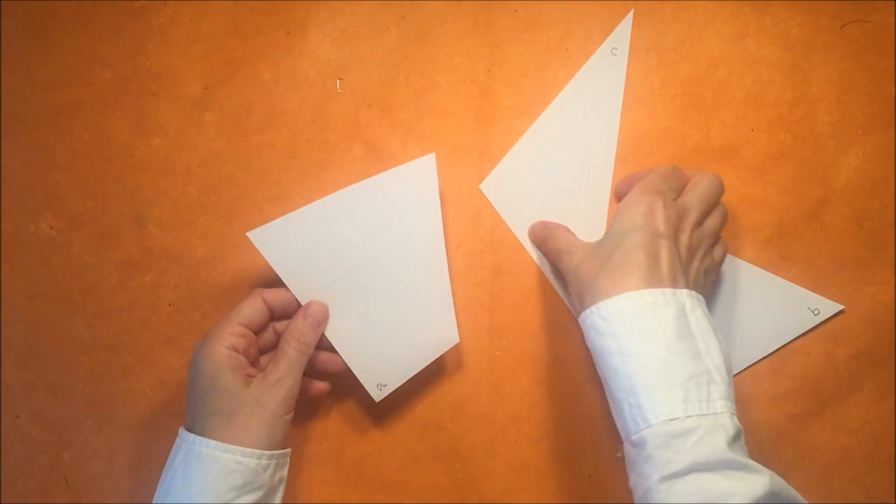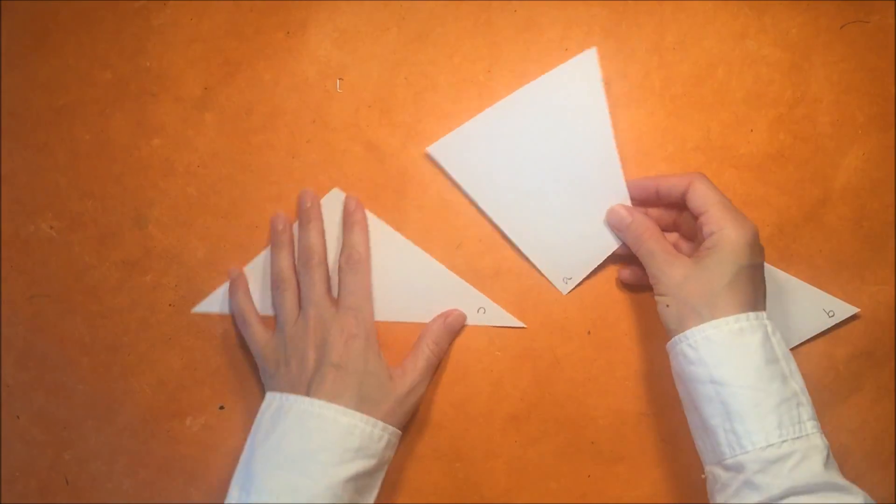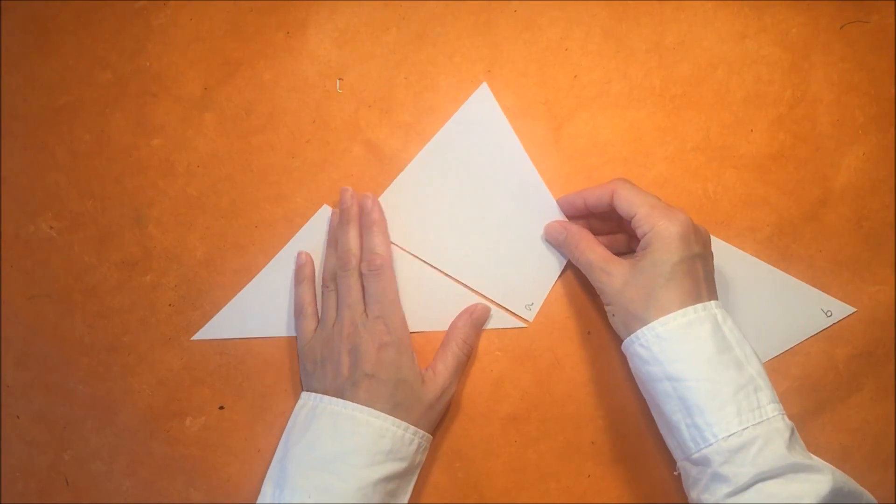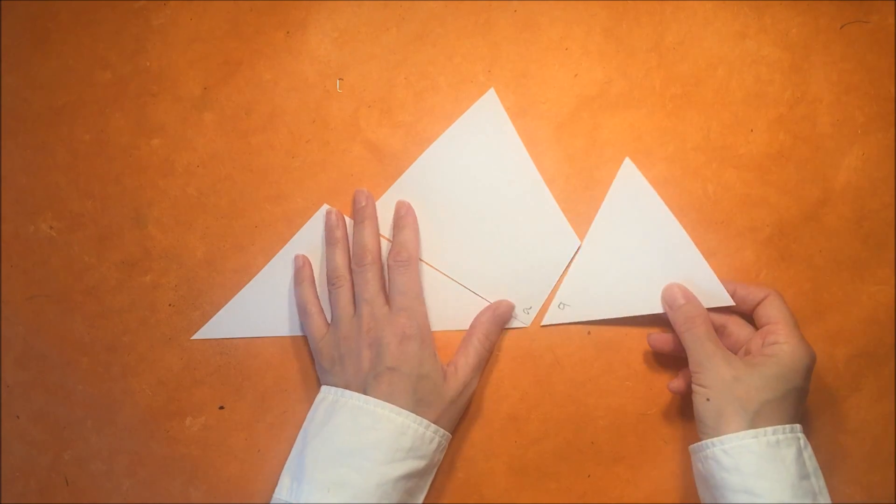Now we're going to reassemble these together to show that the interior angles of a triangle equal 180 degrees.